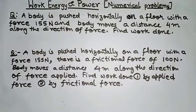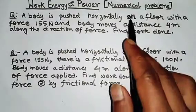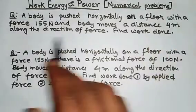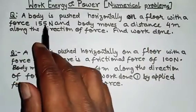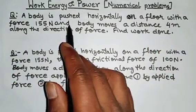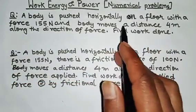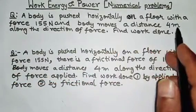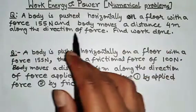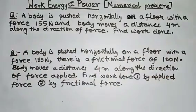Hello class — 9th physics, work energy and power numericals. A body is pushed horizontally on a floor with a force of 155 Newton and the body moves a distance of 4 meters along the direction of force. Find work done.